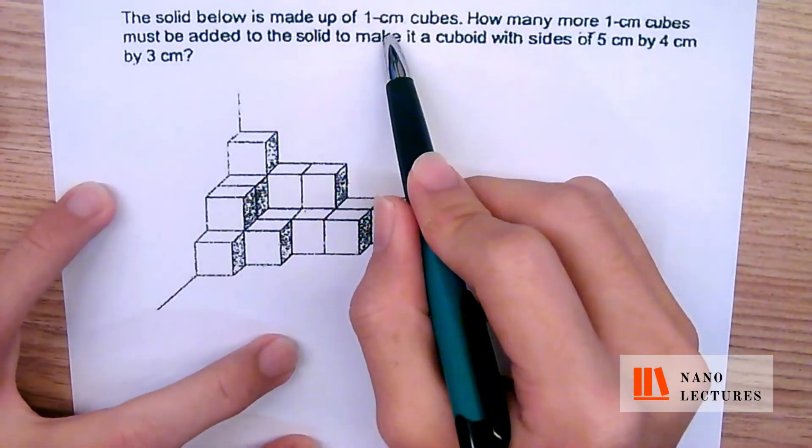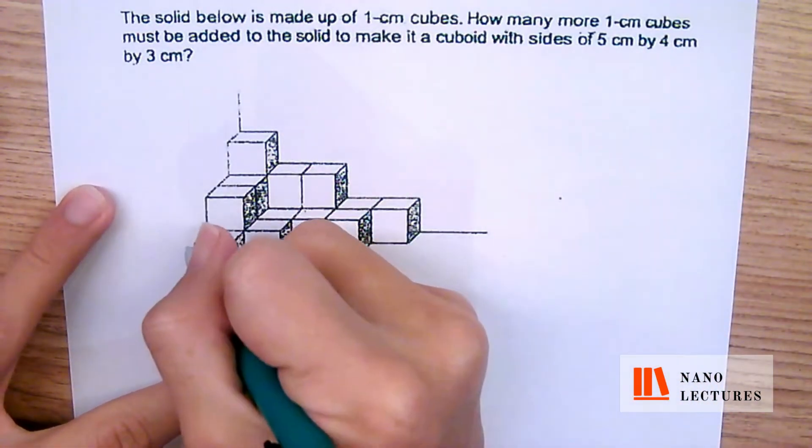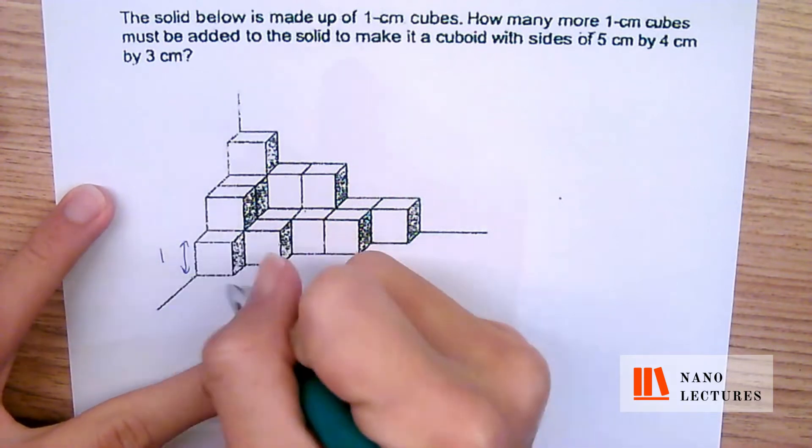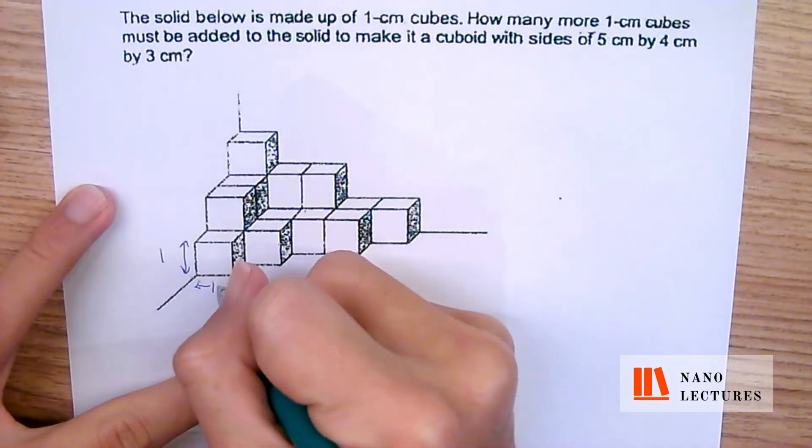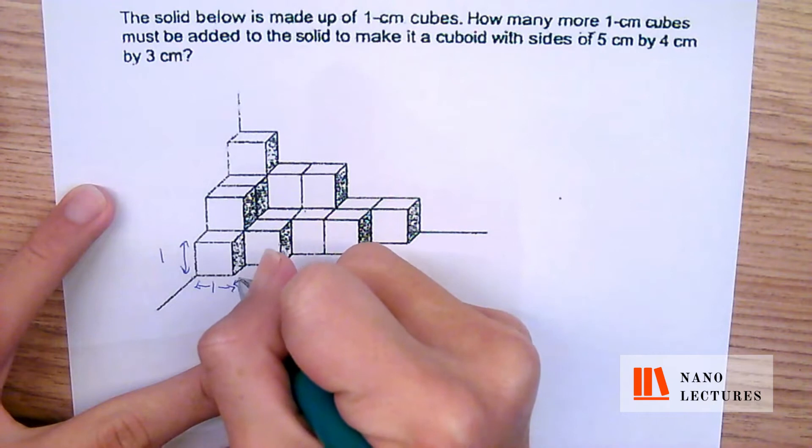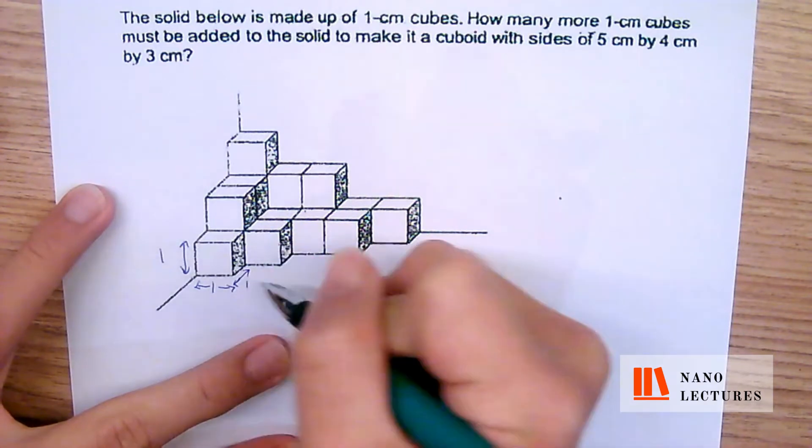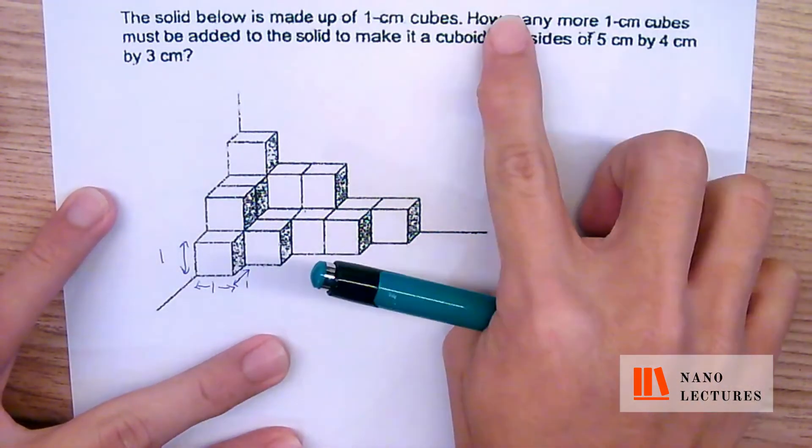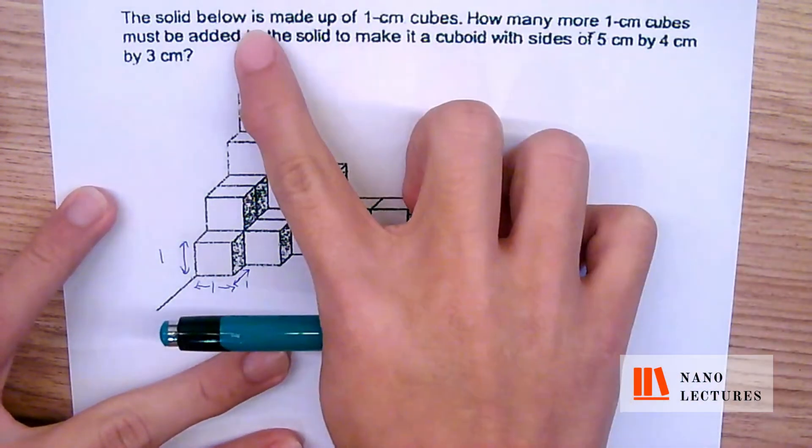The solid below is made up of 1cm cubes, which means that the dimensions of each of them will be 1cm here, 1cm here, and 1cm here as well. This is what it means by a 1cm cube. They are asking for how many more 1cm cubes must be added to this solid.